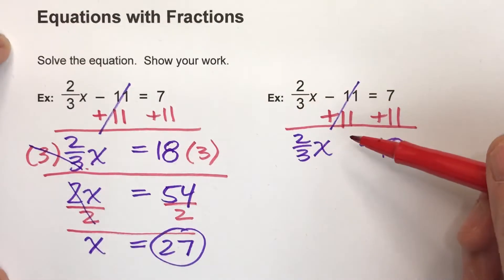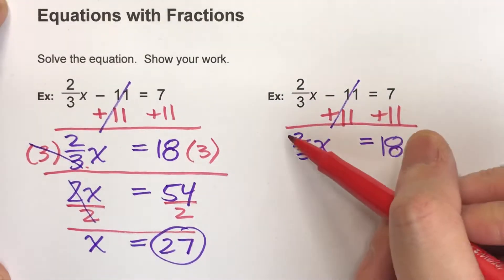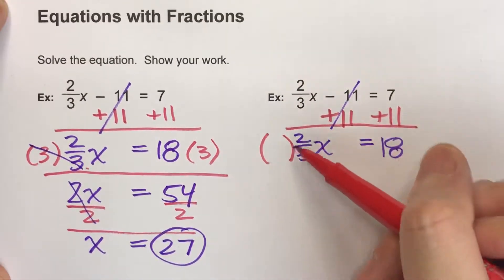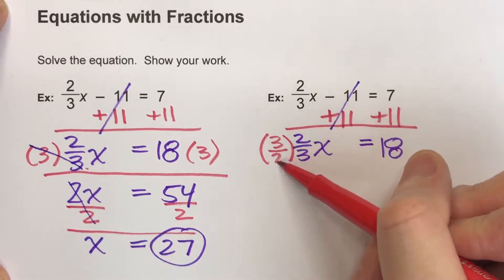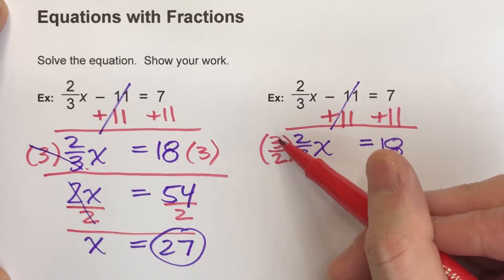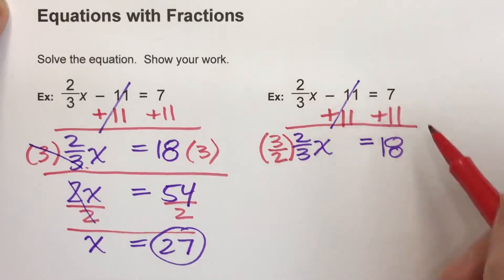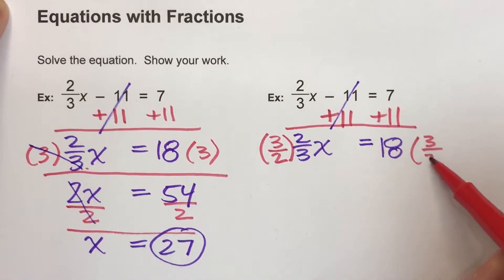Now to undo this fraction, what I'm going to do is multiply by the reciprocal, or in other words, the fraction flipped over. So instead of 2 over 3, I'm going to multiply by 3 over 2. But what I do to one side, I have to do to the other.